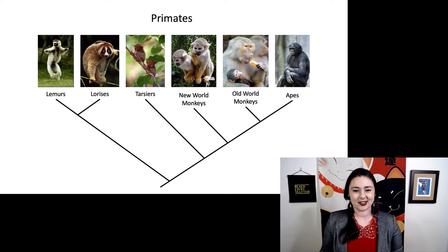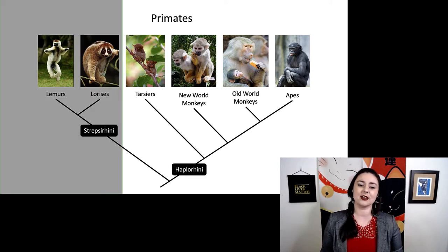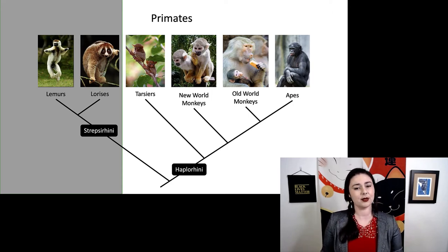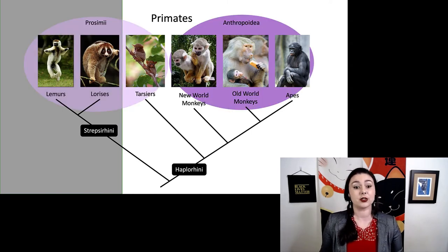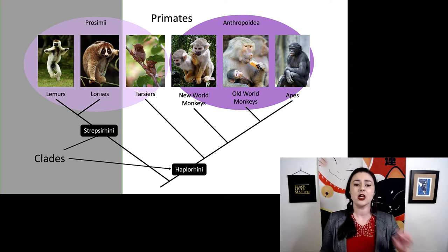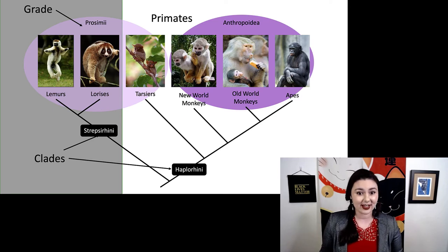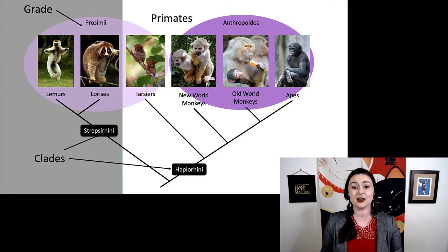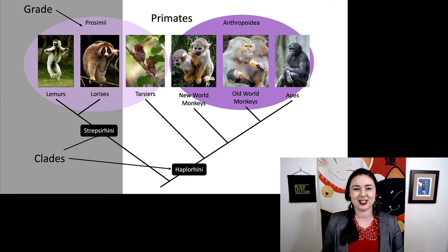Let's look at another primate example. On one side we have our Strepsirhini and on the other our Haplorhini. However, not everybody likes to use this classification. Some people group tarsiers with lemurs and lorises and call that Prosimii, while new world monkeys, old world monkeys, and apes are called Anthropoids or Anthropoidea. Strepsirhini and Haplorhini are true clades — monophyletic groups. Prosimii and Anthropoidea are grades, because the reason people put tarsiers with lemurs and lorises is really that they aren't anthropoids — they're missing the advanced traits we see in anthropoids.